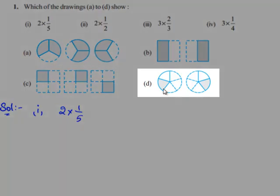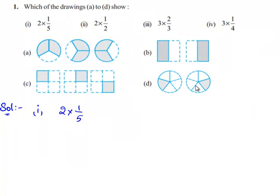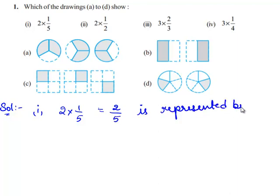When we observe drawing D, we see there are two circles. Each circle is divided into five parts, and among the five parts, one part is shaded in the first circle and one part is shaded in the second circle. Therefore each circle represents the fraction 1 by 5. Since there are two circles, this is represented as 2 times of 1 by 5, which equals 2 by 5. So the fraction 2 times of 1 by 5 is represented by drawing D.